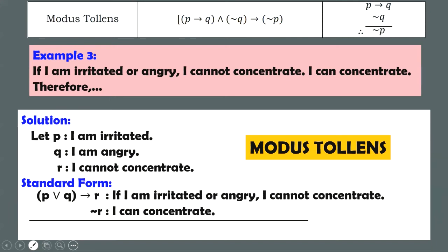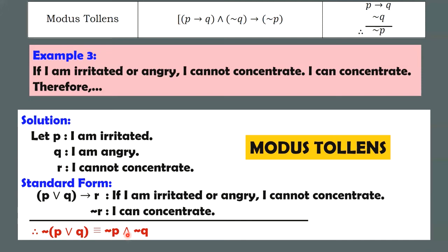Let us recall modus tollens again. If you have a conditional as your first premise, and the second premise is the negation of the conclusion Q, the general conclusion is the negation of the hypothesis. Our hypothesis here is P or Q, so we negate that. And if you recall DeMorgan's law — distributing the negation — it becomes not P and not Q. So how do you translate this into a statement? Negate P and negate Q. This is the valid conclusion to this argument.